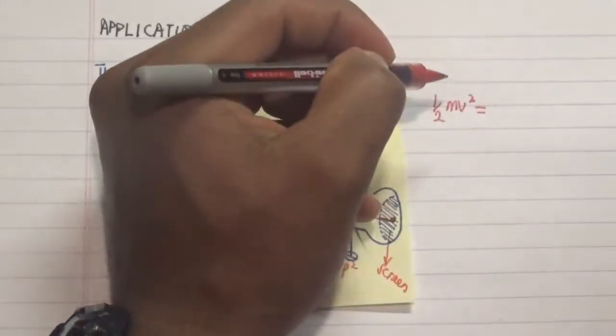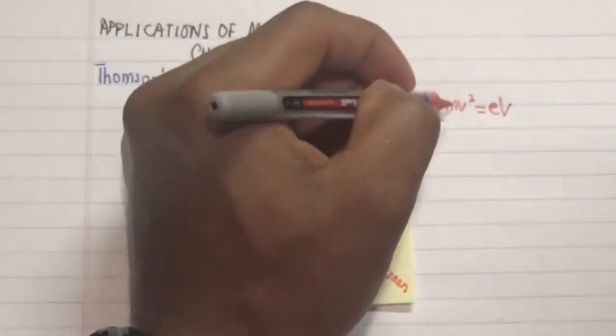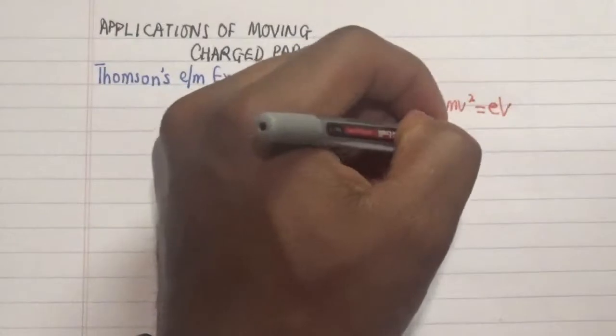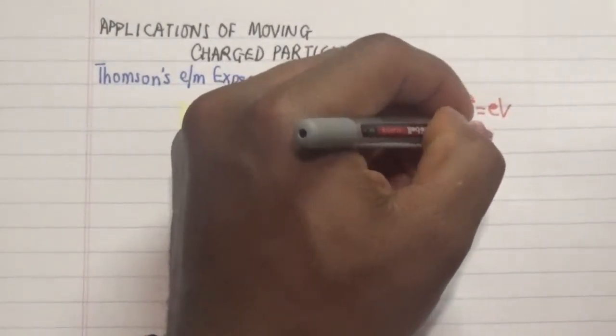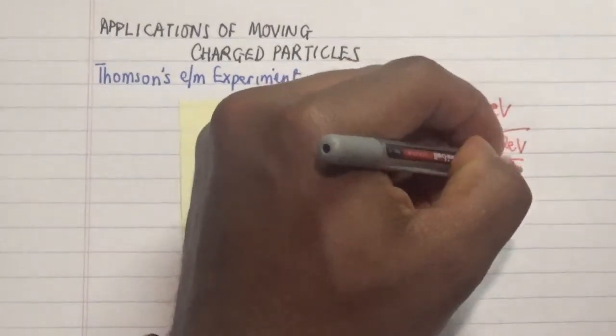We have the gain of kinetic energy which is half mv squared and the loss of electrical energy or electrical potential which is eV. Now if you solve for our velocity what we have is this particular formula: velocity equals to square root of 2eV over the mass.